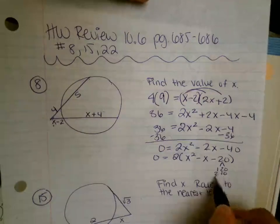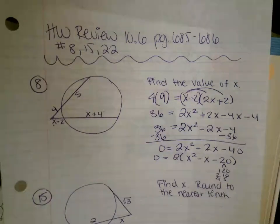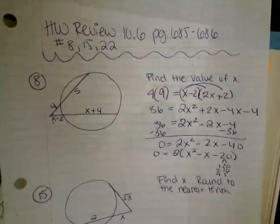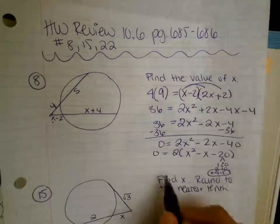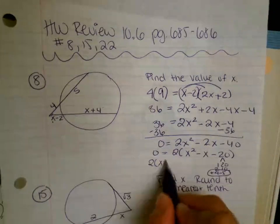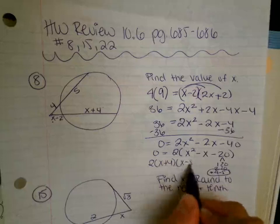What multiplies to negative 20 and adds to negative 1? Negative 5 and positive 4. So we're going to have 2 times x plus 4 times x minus 5.